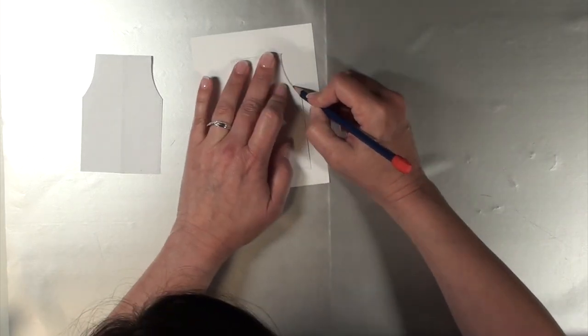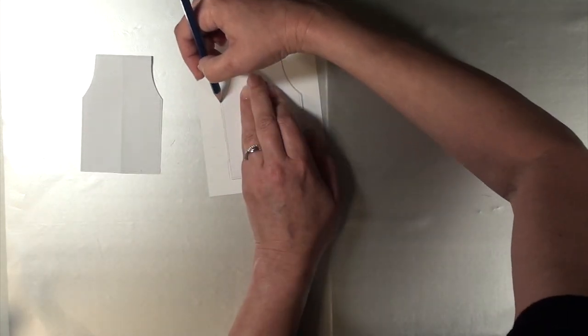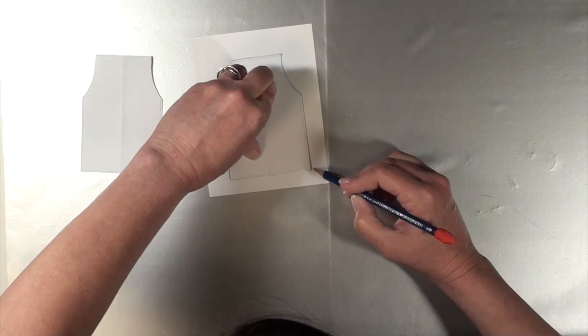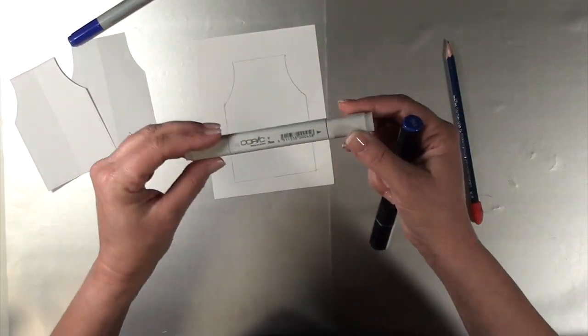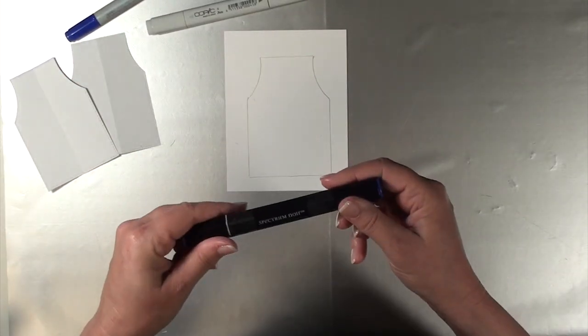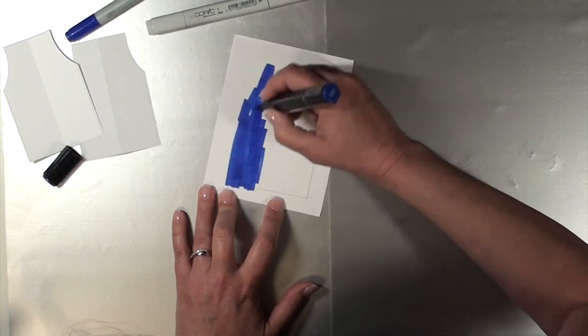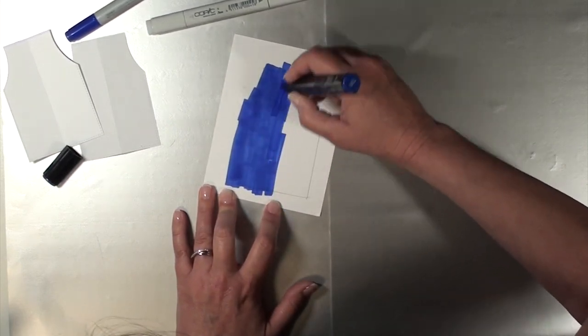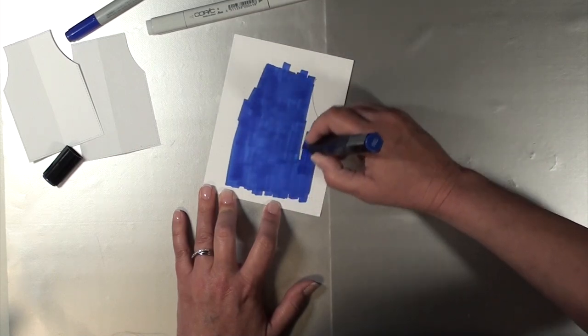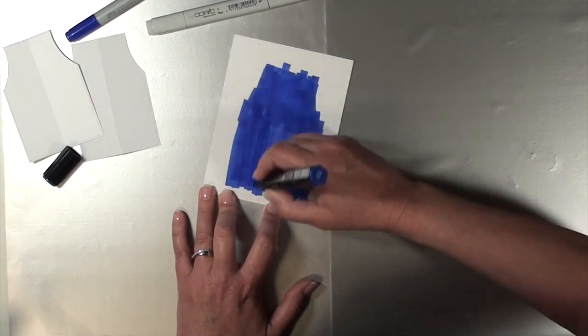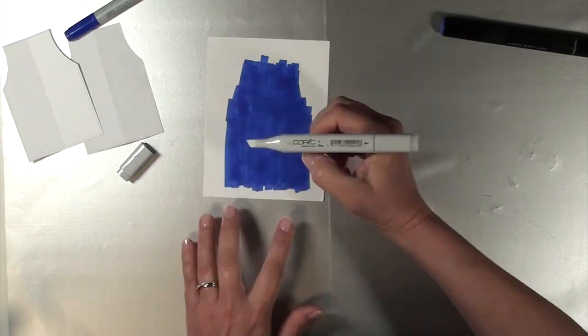At this point I'm using the template I created to trace the apron or basic shape of the apron onto some Neenah solar white cardstock and I will be coloring all over it with one single color. I'm showing two different colors that could work, a Copic B29 or Spectrum Noir TB5 would work because they're pretty much the same color. As you can see I'm just scribbling it all over using the chisel into the marker and just covering over where I drew the template.